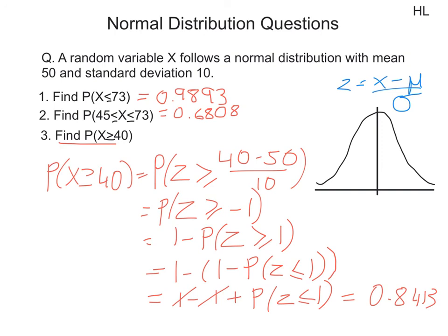Following this, we can say the probability that x is greater than or equal to 40 is equal to 0.8413. That concludes our discussion on normal distribution questions.